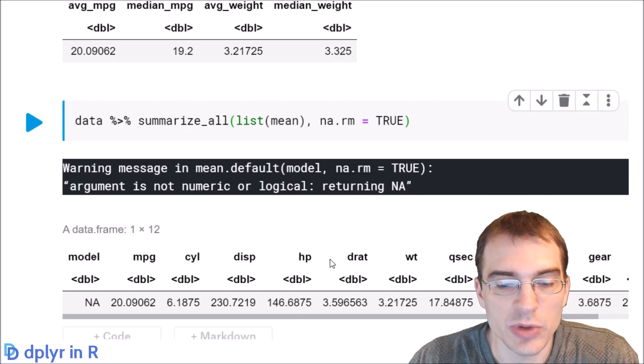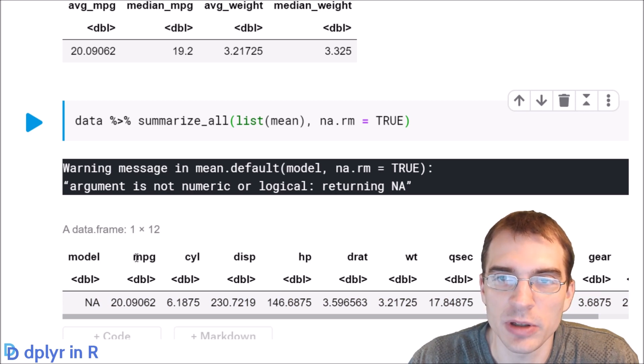As you can see, we produced the mean of every single column, and the names of the columns were just extracted from the names of the original columns. If we wanted to name these something different, we could have done that within this list here.